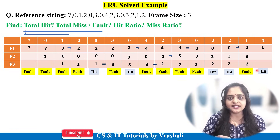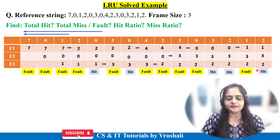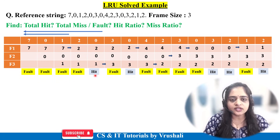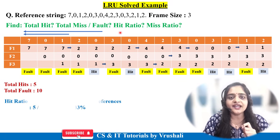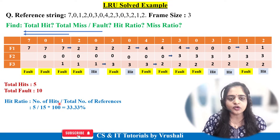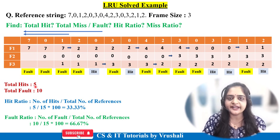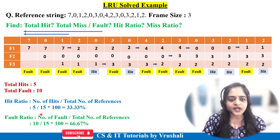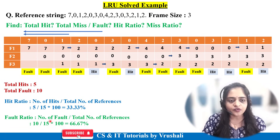In this way you solve the example — by making a comparison between the last three pages, finding which one is the least recently used, and swapping it accordingly. Now find the total hits: there are 5 total hits. Total faults equal 10. For hit ratio, the formula is: number of hits divided by total number of references. So 5 divided by 15 multiplied by 100 equals 33%. For miss ratio or fault ratio, the formula is: number of faults divided by total references. So 10 divided by 15 multiplied by 100 equals 66%.